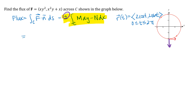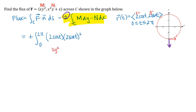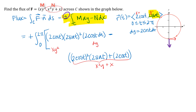Setting up the integral from 0 to 2π: M is xy², with x = 2cos(t) and y = 2sin(t) substituted in. Then dy is the derivative of y = 2sin(t), giving dy = 2cos(t) dt. Then minus N, with dx coming from x = 2cos(t), giving dx = −2sin(t) dt. Once the integral is set up, it's a matter of tidying up and doing the calculus.